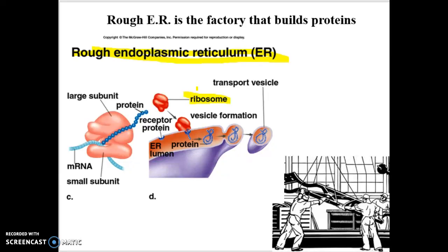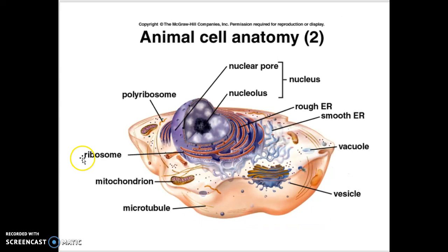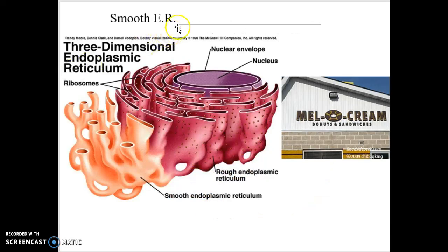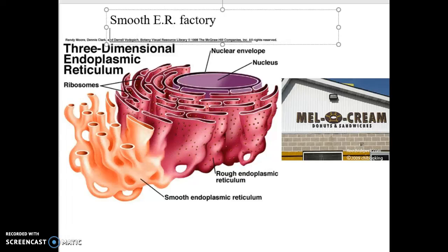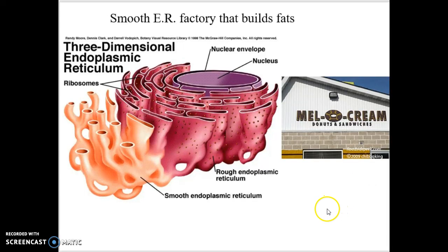The rough ER is directly connected to the nucleus. Looking at the diagram, here's the nucleus, and the squiggly membrane right next to it with all the ribosomes on it is the rough ER. A little further away from the nucleus is the smooth ER — another factory, but this one builds fats rather than proteins. So we have a cell structure that makes proteins and a cell structure that makes fats: rough ER makes protein, smooth ER makes fats.